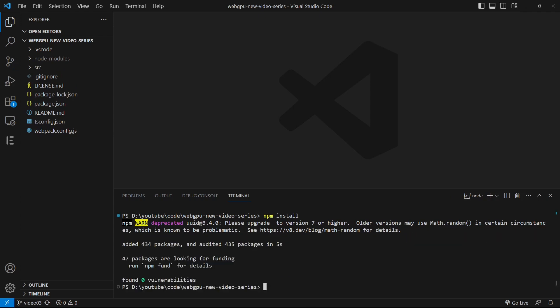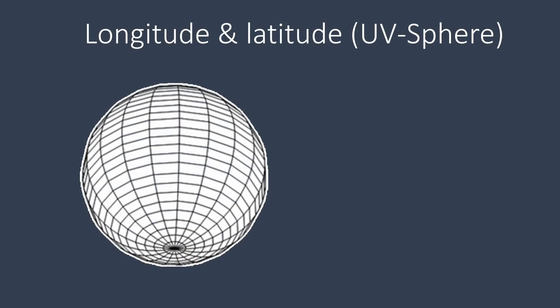In this example, we will employ the commonly used longitude and latitude approach to create a sphere with wireframe. This method is also known as the UV sphere. The UV sphere method involves dividing the sphere into U-segments and V-rings, as illustrated here.